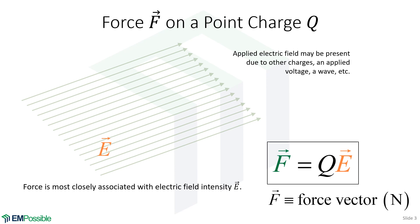Let's say we have a uniform electric field E, and somewhere in the middle of that field is a positive charge Q. It turns out, and we learned this through observation, that this electric field will put a force on that positive charge. And it turns out, for positive charges, that force will be in the same direction as the applied electric field.